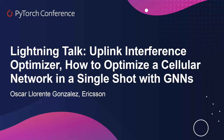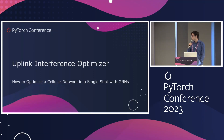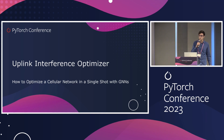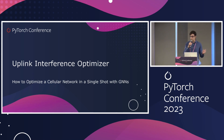I'm a data scientist working at Ericsson, mainly in optimization of cellular networks. The use case is the uplink interference optimizer — how to optimize a cellular network in a single shot with graph neural networks. I'm going to focus on the uplink interference problem, because that's the problem we are going to try to optimize.